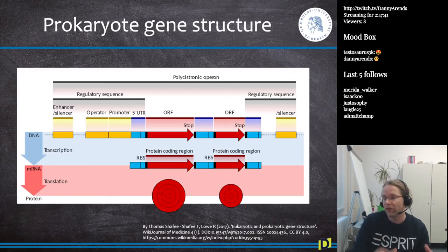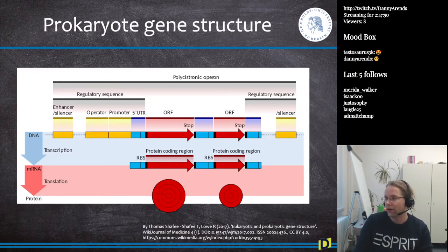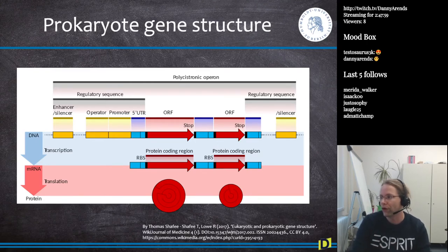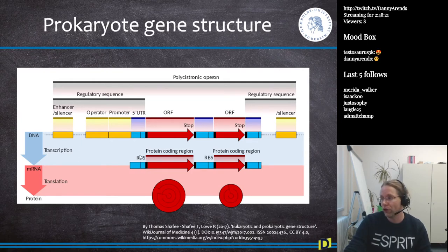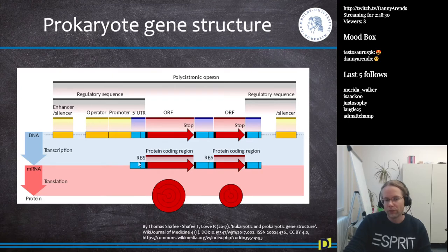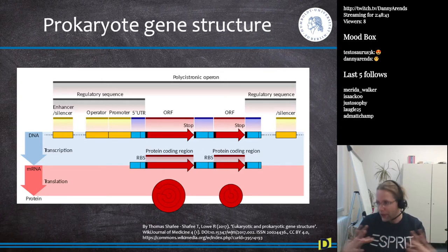In bacteria, the entire region from the 5' UTR to the 3' UTR gets transcribed onto a single messenger RNA, which can encode two, ten, or even fifteen proteins. This is efficient because one mRNA produces multiple proteins. Bacteria group genes needed together under a single control region. The ribosome binding site (RBS) allows multiple ribosomes to bind a single mRNA. In bacteria, this whole polycistronic operon — regulatory sequences, UTRs, and open reading frames — is considered the gene.